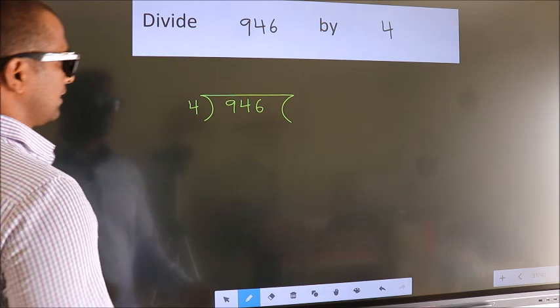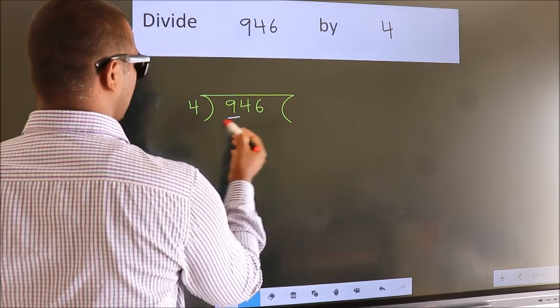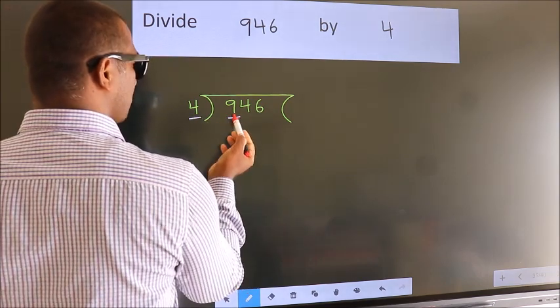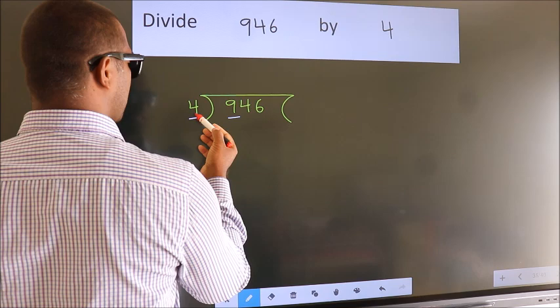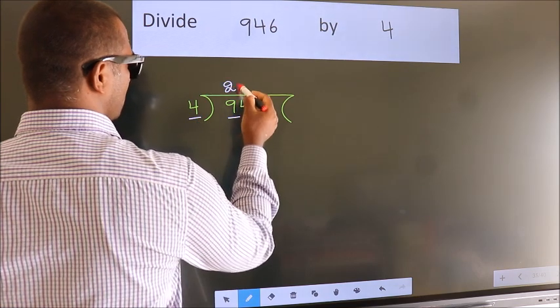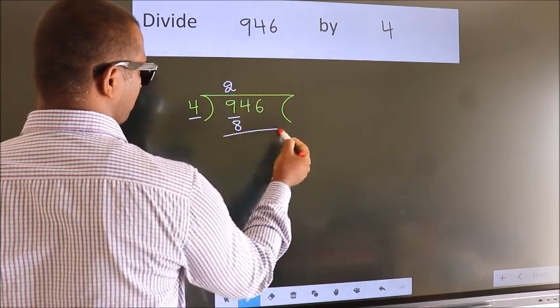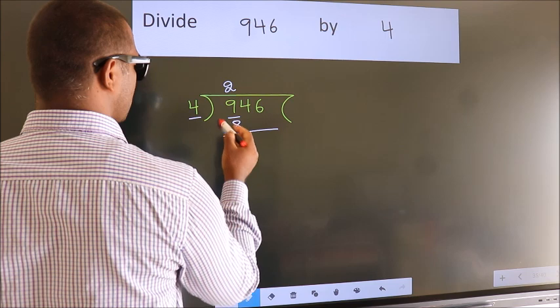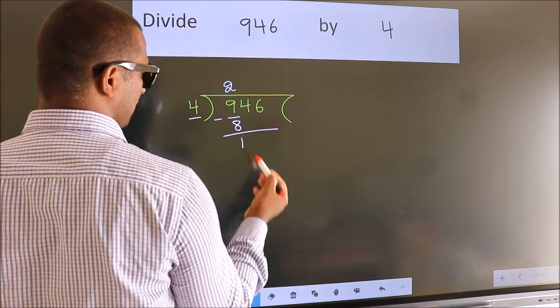Next, here we have 9, here 4. A number close to 9 in 4 table is 4 twos, 8. Now we should subtract. We get 1.